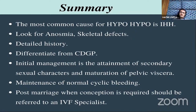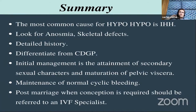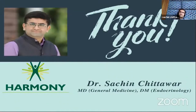Key takeaways: The most common cause of hypogonadotropic hypogonadism is idiopathic. Look for anosmia, skeletal defects, and synkinesia; detailed history is vital. Differentiate from CDGP — if there are pubic hairs, it may point toward hypogonadotropic hypogonadism rather than CDGP. Wait until 18 years before confirming the diagnosis of hypogonadotropic hypogonadism; 10% of these patients do achieve puberty spontaneously. Initial management focuses on attainment of secondary sexual characteristics, maturation of pelvic organs, and maintenance of normal cyclic bleeding. Post-marriage, when conception is required, refer to an IVF specialist. Thank you for this opportunity.